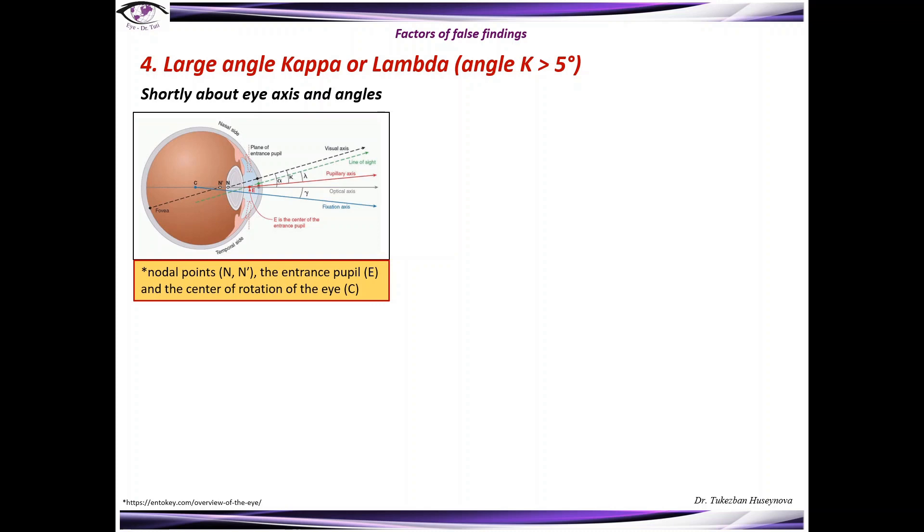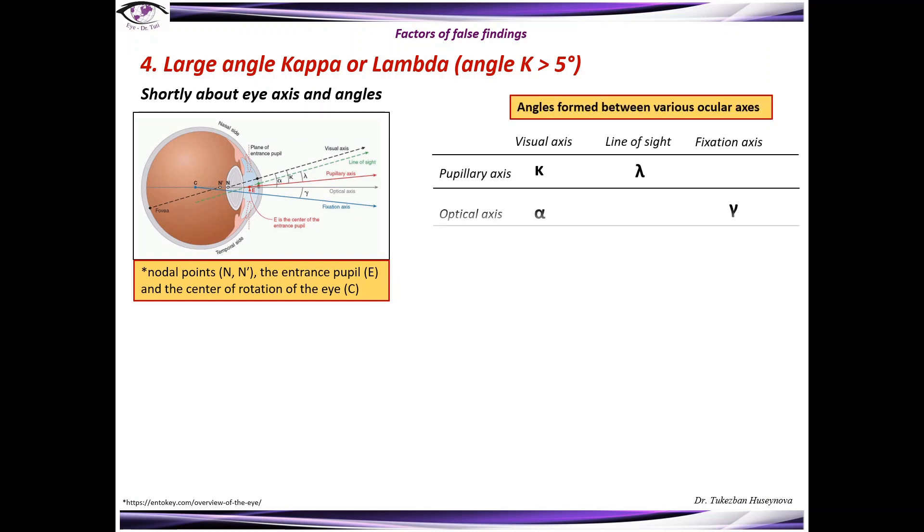Another reason of false findings is large angle kappa or lambda. In this table you can see a few angles which are being formed between eye axis. Angle kappa is being formed between visual axis and pupillary axis, and angle lambda is being formed between line of sight and pupillary axis. The normal value of angle kappa is between 2 and 5 degrees. When it's more than 5 degrees, then we consider it as a large angle kappa.